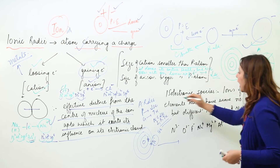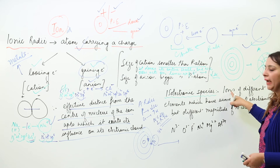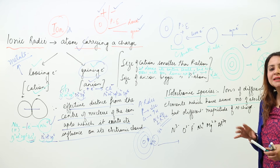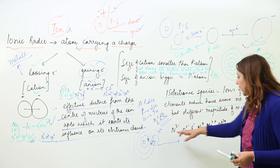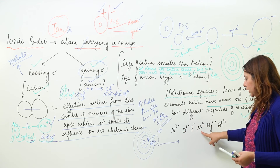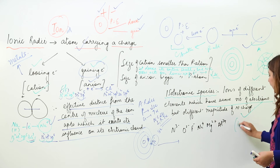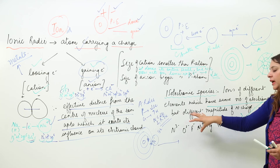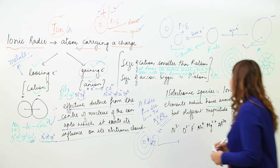Now we have isoelectronic species. Isoelectronic species are ions that have the same number of electrons — 'iso' means same, 'electronic' means electrons. They have the same number of electrons but differ in nuclear charge. Examples are N³⁻, O²⁻, F⁻, Na⁺, Mg²⁺, and Al³⁺ — all of them have 10 electrons, yet they differ in size.